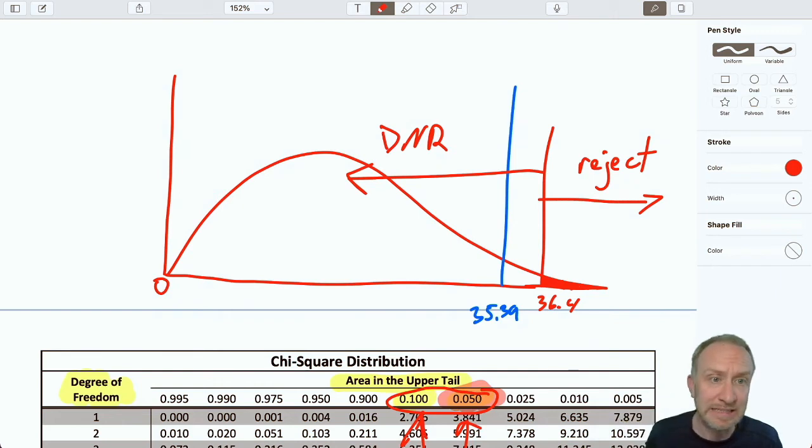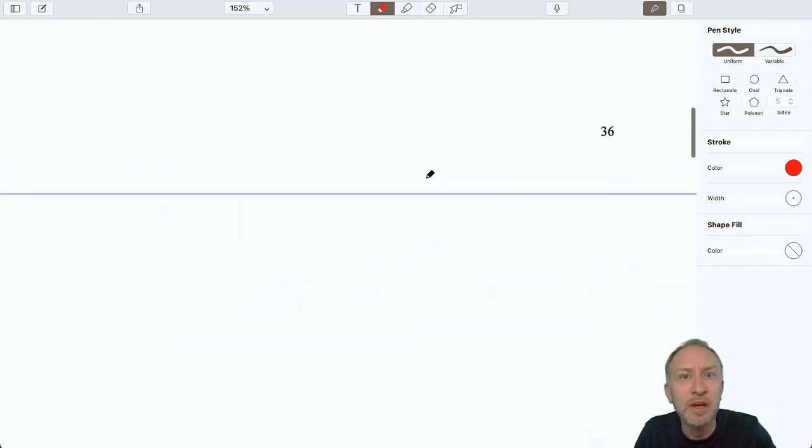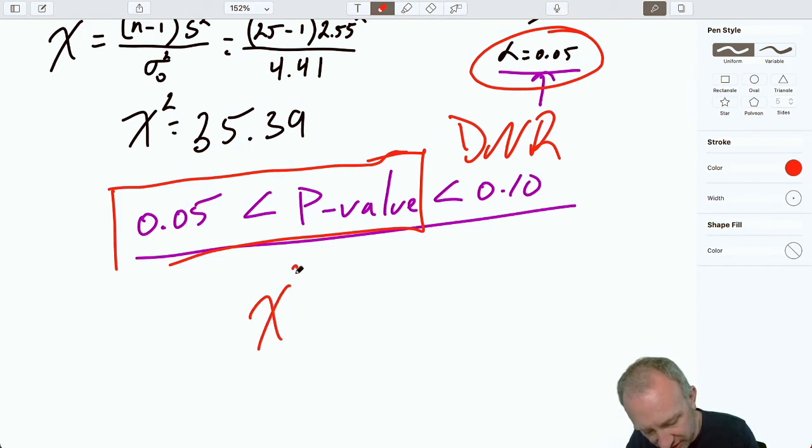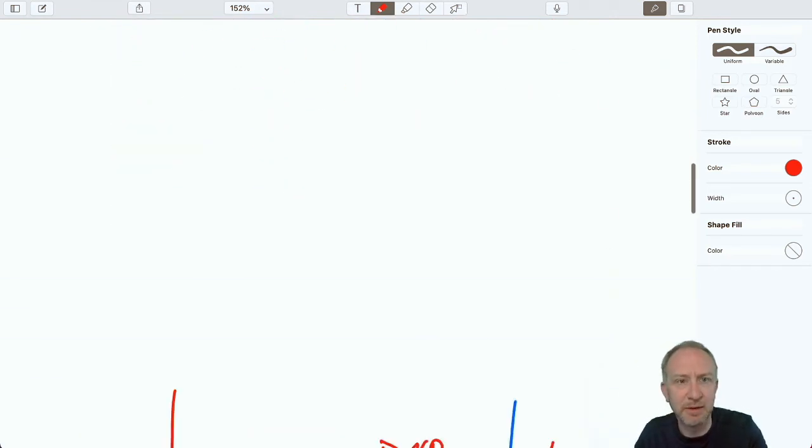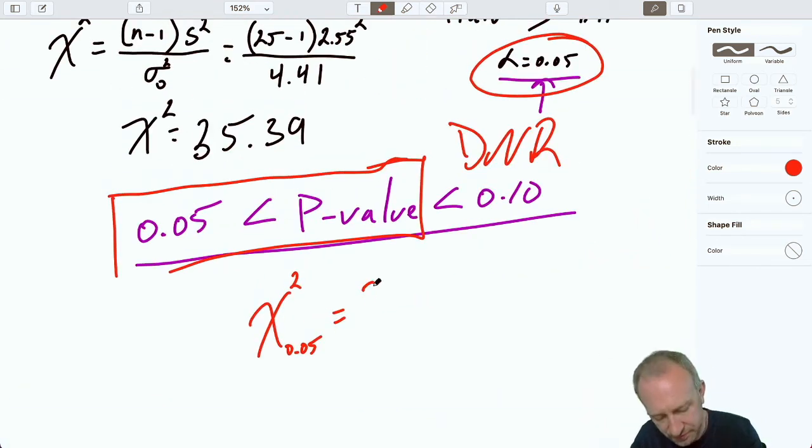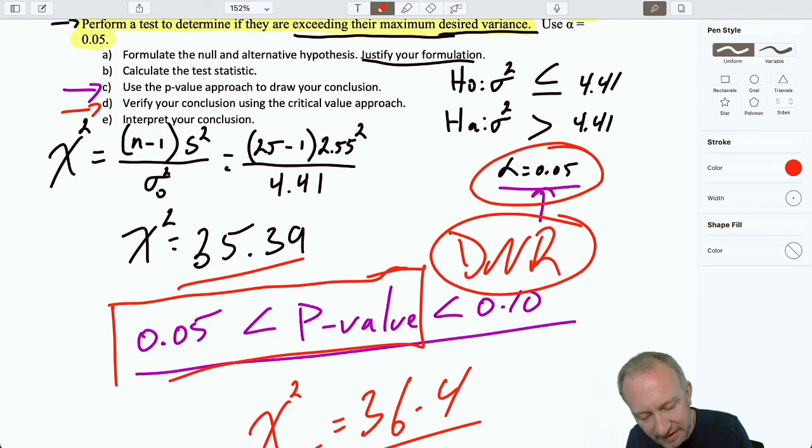And once again, we will always get the same conclusion, regardless of which approach we use. We use both approaches just really for practice. P-value approach is generally a more preferred approach to hypothesis testing. But we see here that we get the same conclusion. For students who are just learning how to do all of this stuff, sometimes it's just good practice to do both the P-value approach and the critical value approach because they're redundant. And so it's a way you can kind of double check your answer to make sure you're on the right track. So both of those approaches, we have our critical value for a value of 0.05 in that upper tail was 36.4. And our test statistic was smaller. We get the same conclusion.